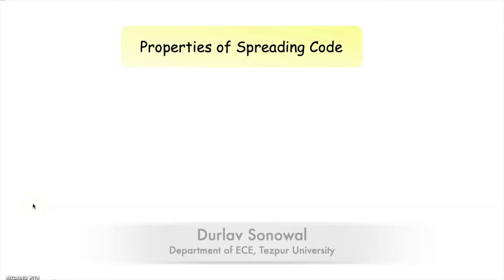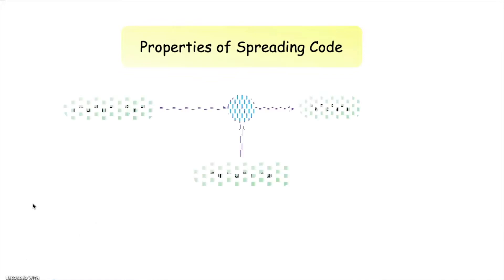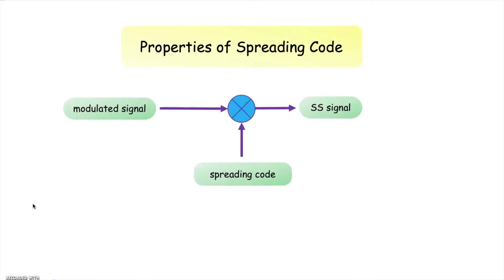Hello viewers. In my earlier video you have been introduced with the basic concepts of spread spectrum. We have also discussed on direct sequence spread spectrum and frequency hopping spread spectrum, where we have seen that a modulated signal is multiplied with a spreading code to generate a spread spectrum signal. In this video we are going to discuss various properties of spreading code.